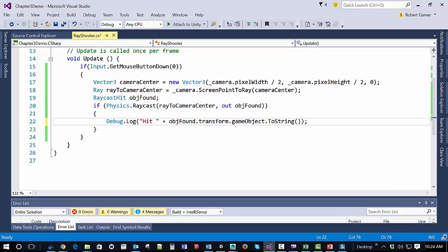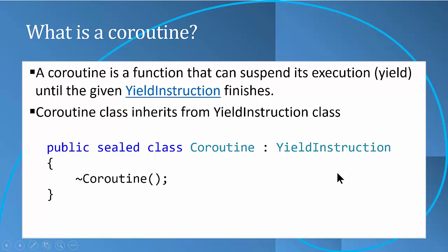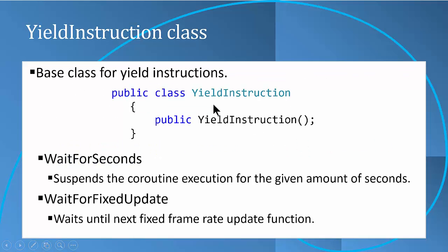Let's add some kind of visual indicator to the scene. To do that we're going to use something called a Coroutine. A Coroutine is a function that can suspend execution until a given yield instruction finishes. The Coroutine class inherits from the YieldInstruction class. There are a couple of classes we can use to wait for a certain event before the Coroutine completes — for example, WaitForSeconds will wait for a certain number of seconds. This will be useful because if we make a sphere indicator to show where we struck a wall, we can use WaitForSeconds to have it disappear after a period of time.